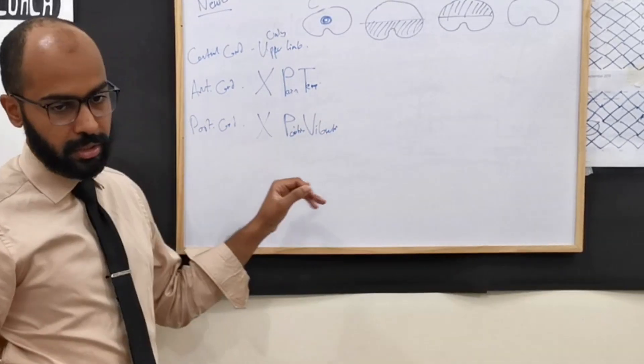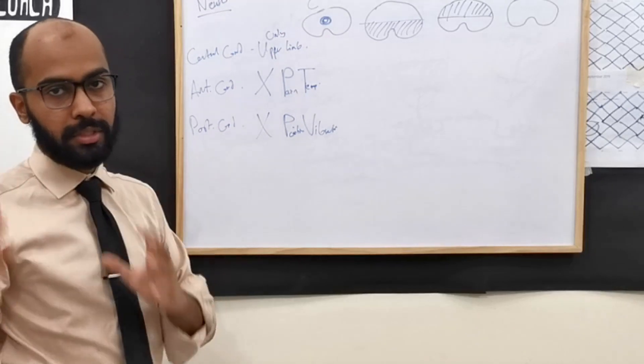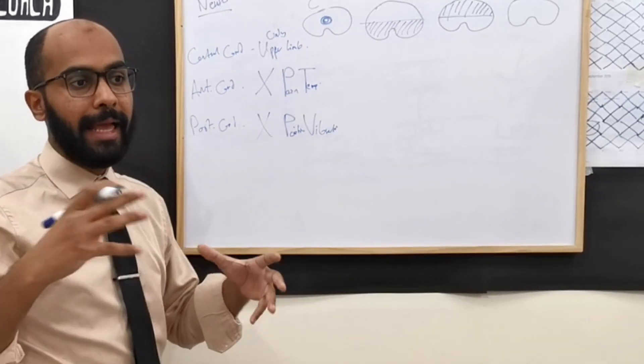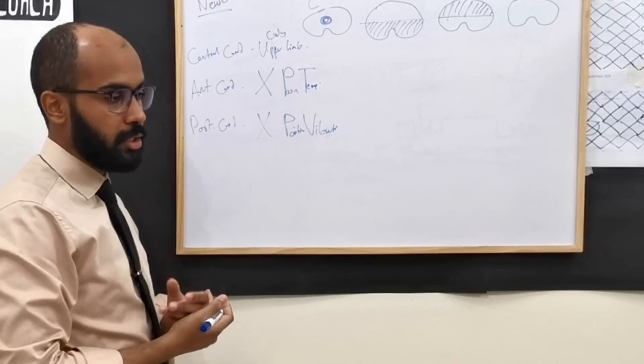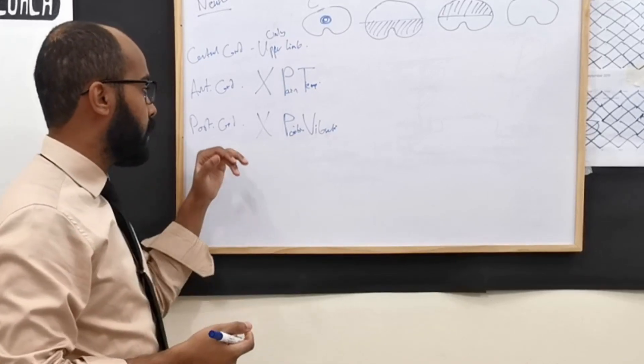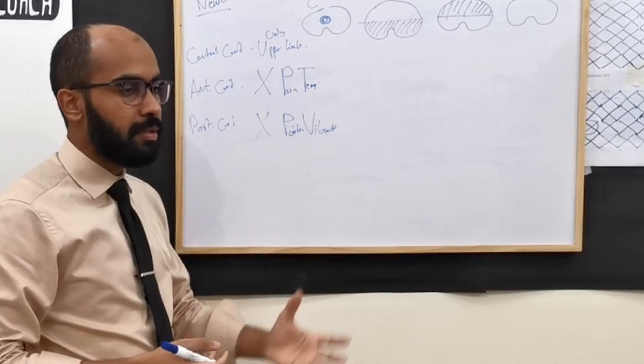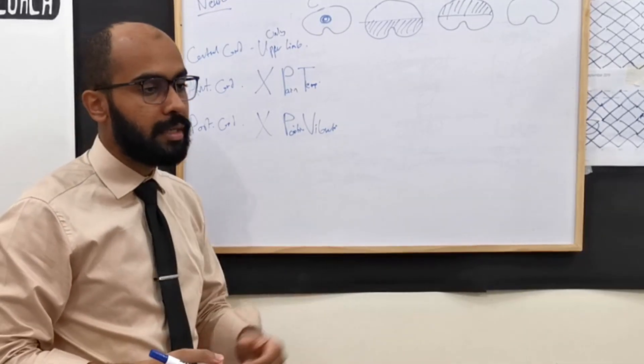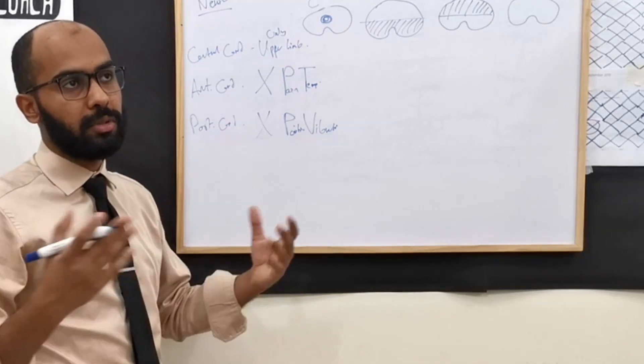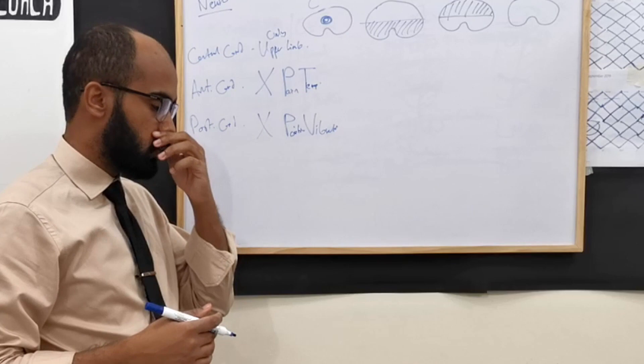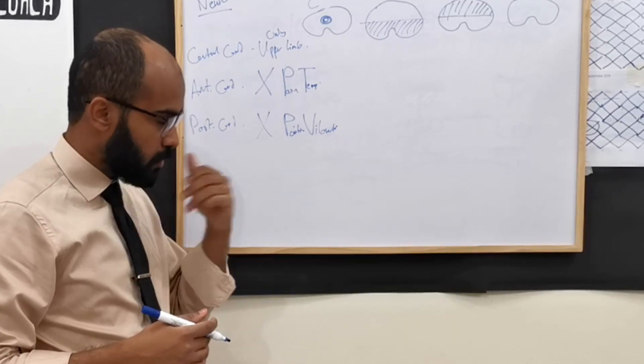So loss of position and loss of vibration sensation. They cannot feel position and they cannot identify vibrations. We'll come to this later when we talk about vitamin B deficiency and syphilis and whatnot, tabes dorsalis. We'll discuss posterior cord syndrome or dorsal column syndrome more with better examples.